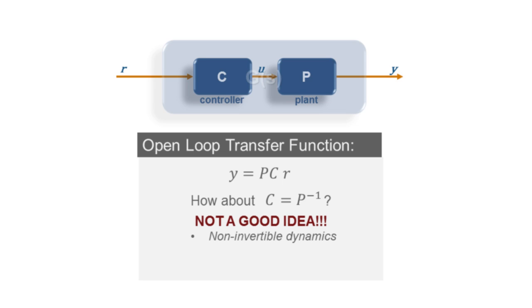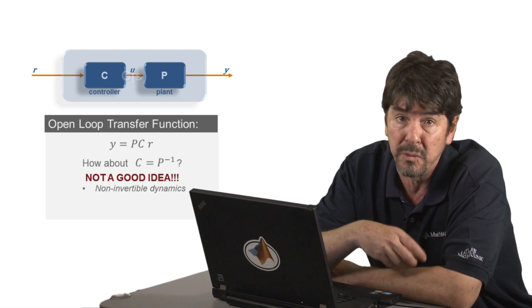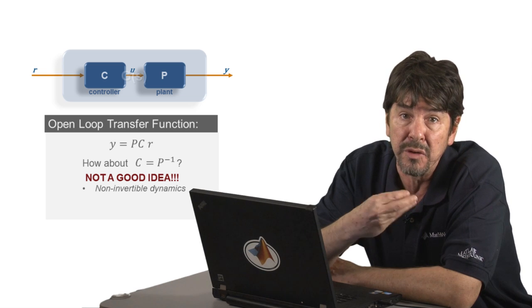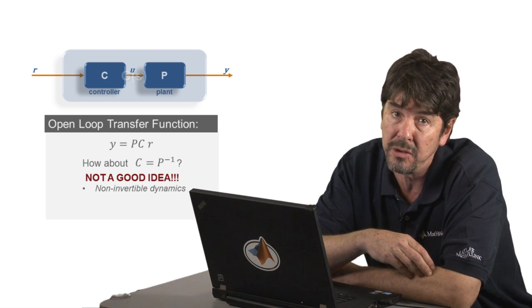First of all, because most of the time, plant dynamics are non-invertible. If the denominator has a higher order than the numerator, which is normally the case, trying to invert that will violate causality and cannot be implemented in a controller.